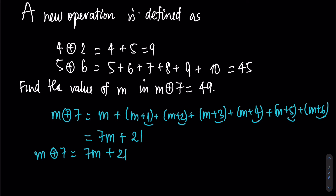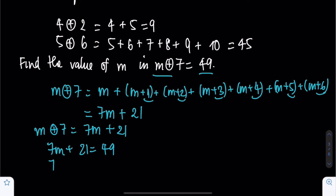Summing the 7 terms gives us 7M plus 21. So 7M plus 21 equal to 49, which means 7M equal to 28, therefore M equal to 4.